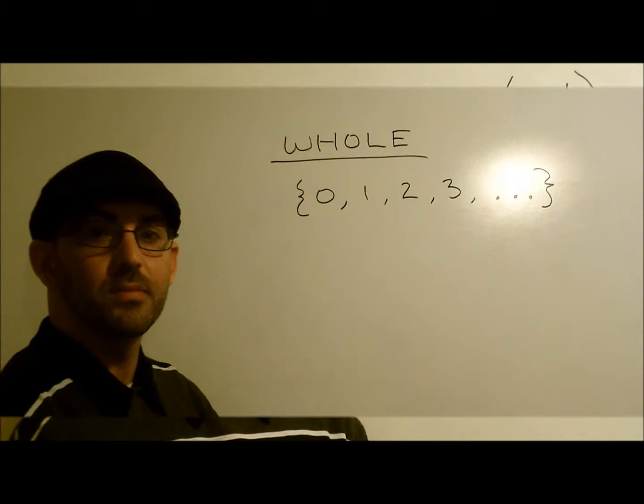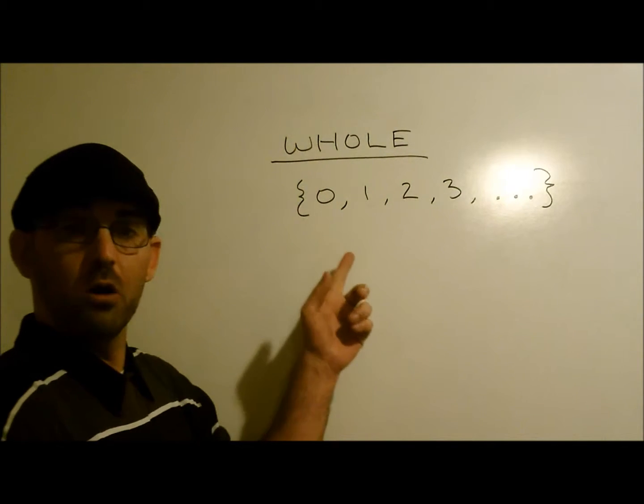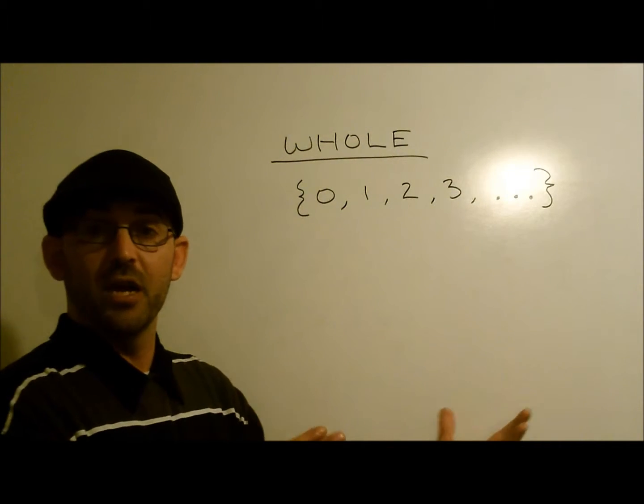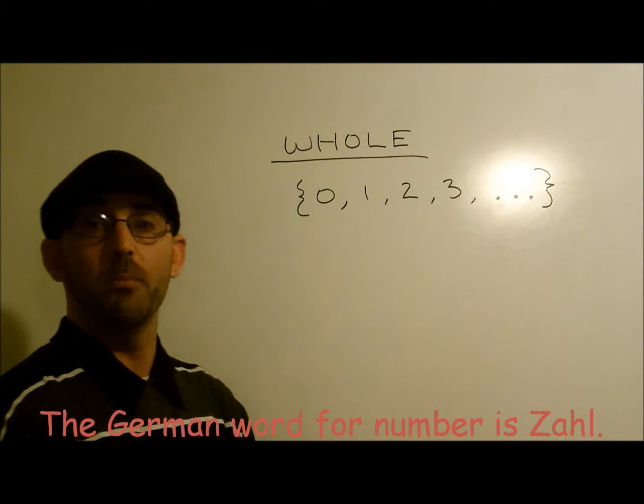This is what the natural numbers are all about. Whole numbers are very simple. They are just 0 plus all of the natural numbers. That means it starts from 0 and continues on forward to positive infinity.